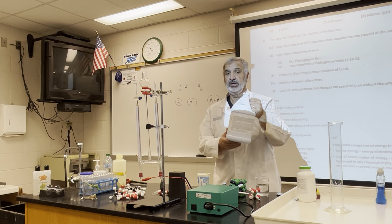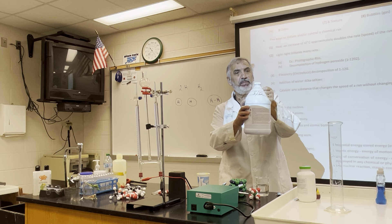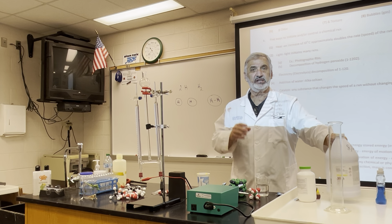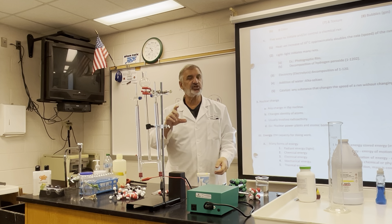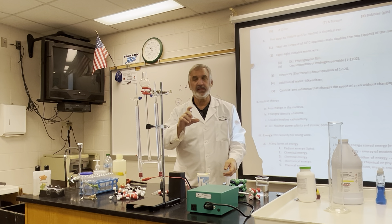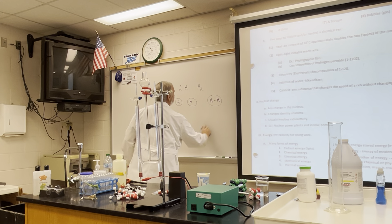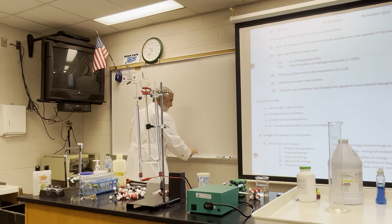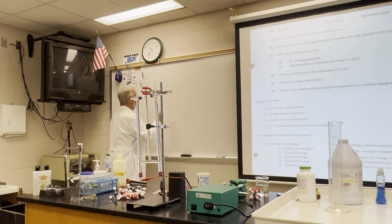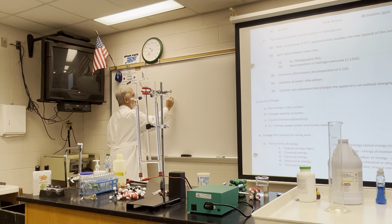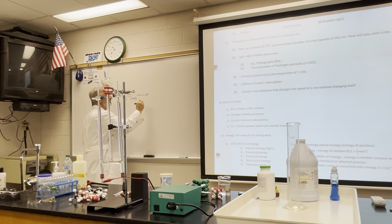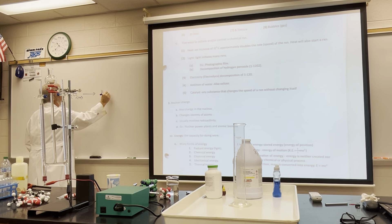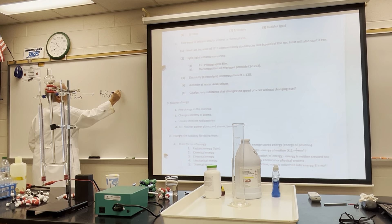The law of conservation of mass says matter can neither be created nor destroyed. So when we balance an equation, we have to make sure we have the same number of atoms on both sides. Four hydrogens on the reactant side means four hydrogens on the product side; two oxygens here means two oxygens there. That's why we balance chemical equations, and we'll do a lot more of that later.